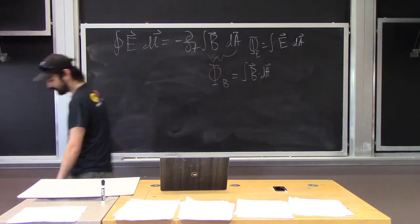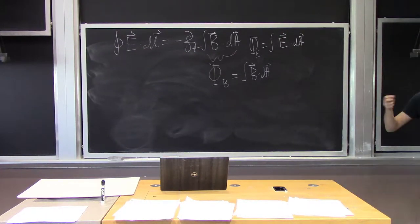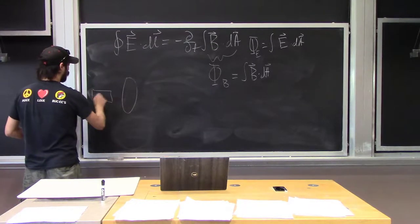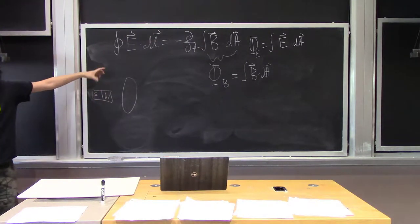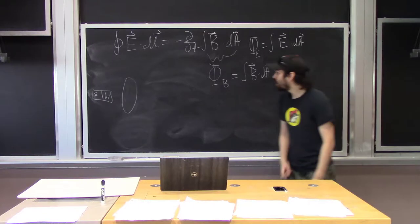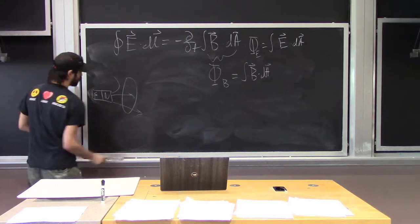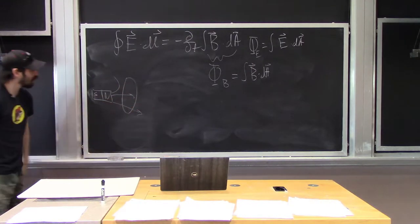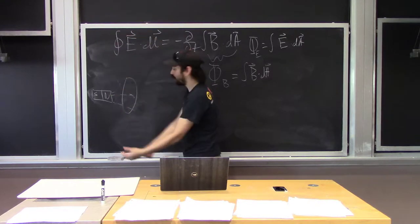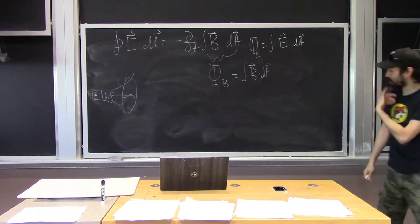Faraday's law is not so interested in what the magnetic flux is exactly, but in how it changes with respect to time. For example, if I have a loop of wire and a magnet — north end here, south end there — and I just hold it still, nothing happens. To get current to move around the loop, I need to change the magnetic flux. One way is to move the magnet, which changes how many field lines pass through the loop. Another way is to change the size of the loop — stretching it lets more field lines through, contracting it lets fewer through.